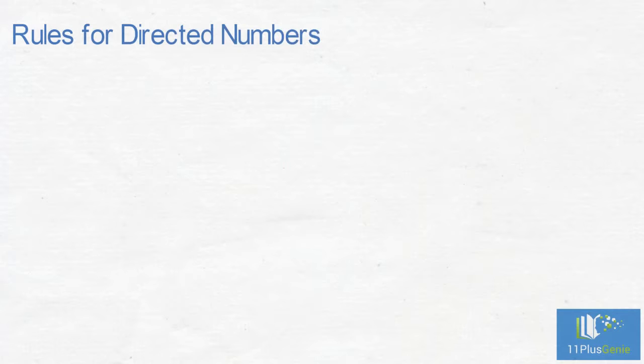Rules for directed numbers: When we have a positive next to another positive, it forms a positive. When we have a negative next to another negative, it forms a positive. When we have a negative to a positive, it forms a negative. When we have a positive next to a negative, it forms a negative. If the two signs next to each other are the same, it forms a positive. If the two signs next to each other is different, it forms a negative.